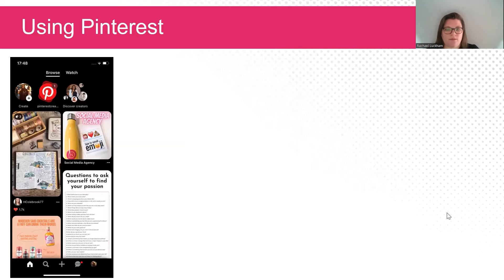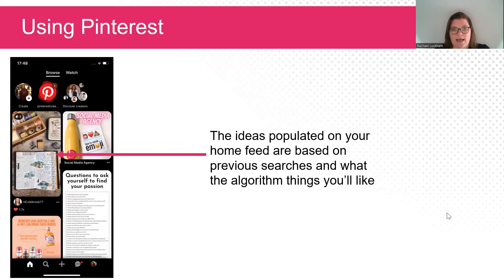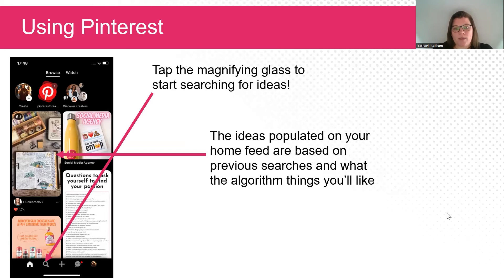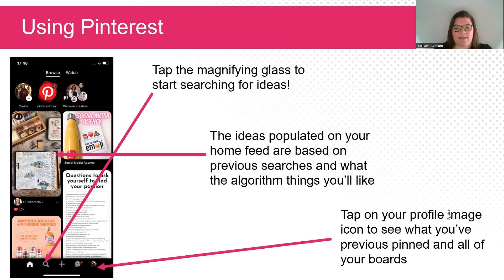So let's get pinning. When you open up the app, this is the screen you'll be greeted with — your home feed. You'll have a load of pins that will appear first. These ideas are populated based on your previous searches and what the algorithm thinks you'll like, the same as the TikTok FYP and YouTube shorts — it's pushing you content it thinks you'll like based on what you've either searched or previously watched. Next up, we've got the magnifying glass — this is how you're going to search for your content. And by tapping on your own profile icon, you can go and find your boards and therefore refer back to any previous pins that you might have saved.